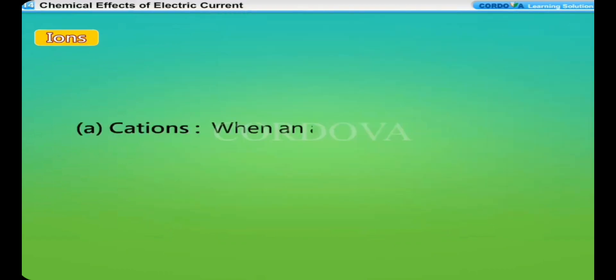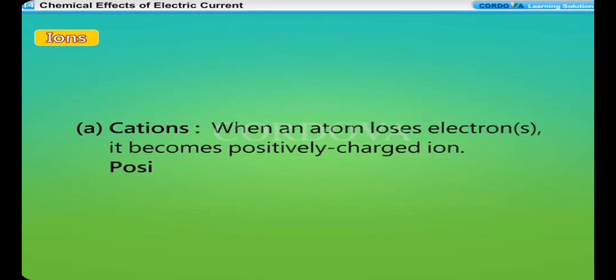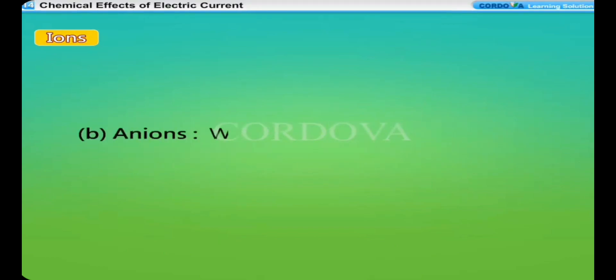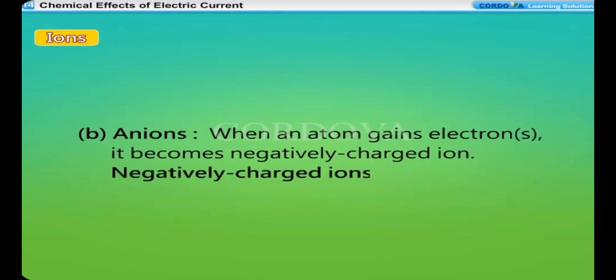Cations: When an atom loses electrons, it becomes positively charged ion. Positively charged ions are called cations. Anions: When an atom gains electrons, it becomes negatively charged ion. Negatively charged ions are called anions.